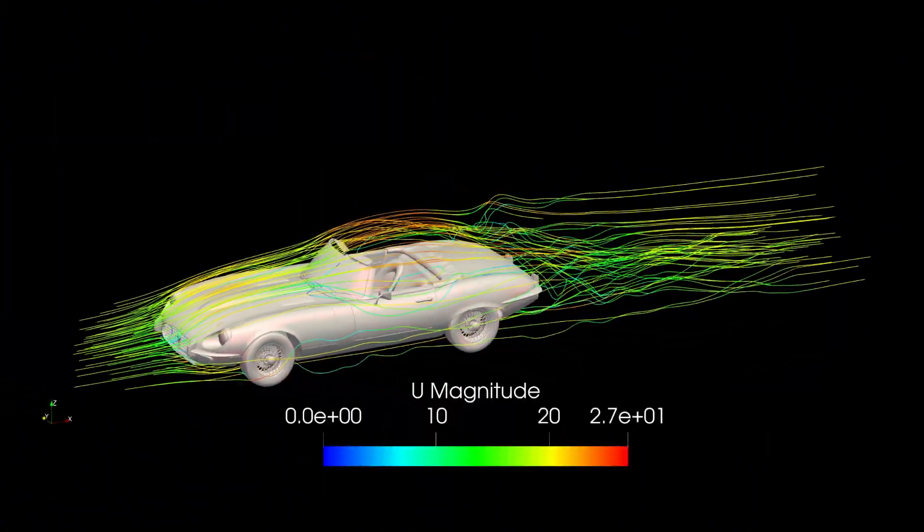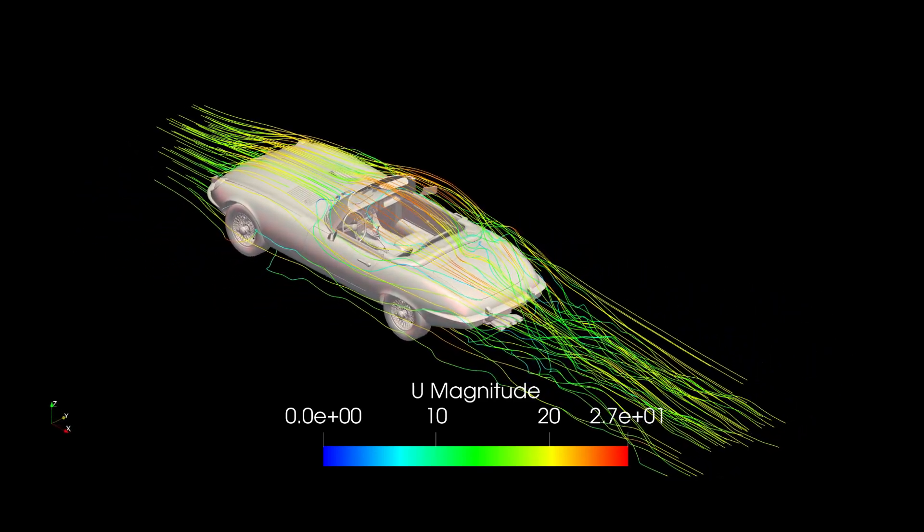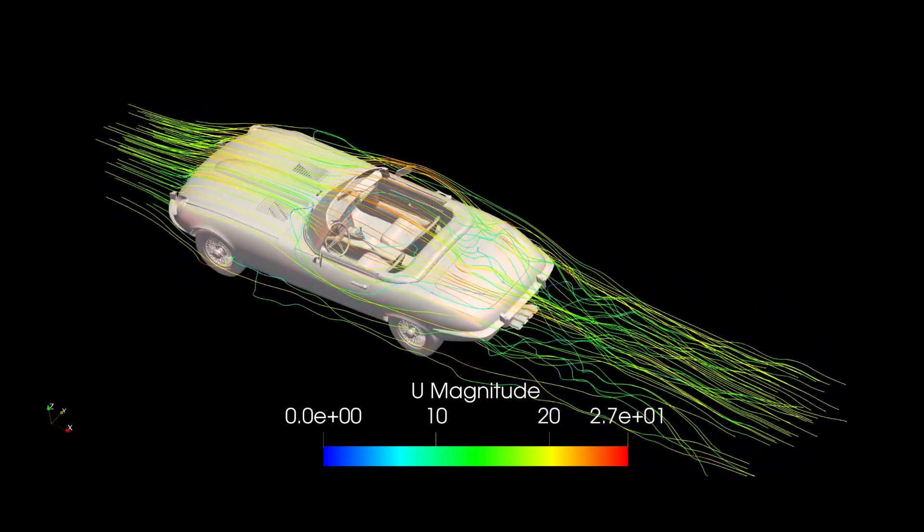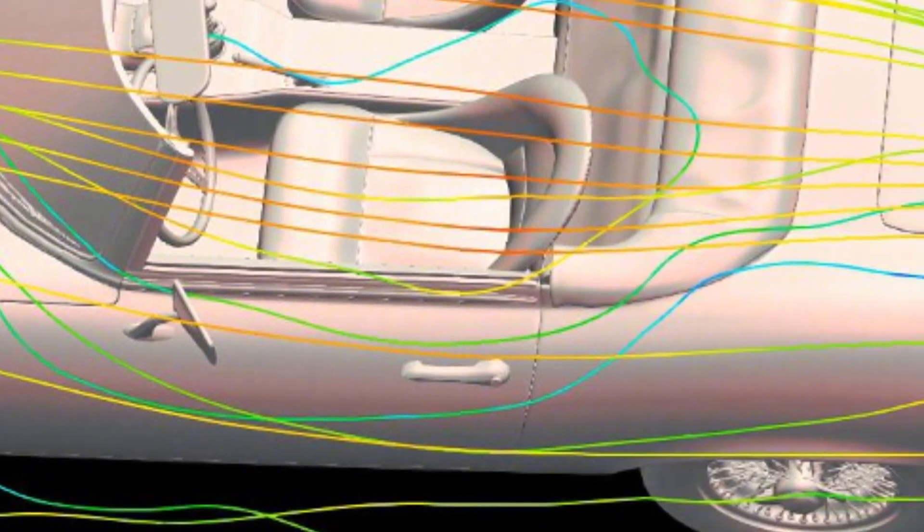These streamlines show us just how disjointed the flow is over the Jag. It is really nice over the front, but then it hits the front windshield, zips over the cabin, and just goes haywire from there. One thing to note is you can see at the edge of the windshield, the flow seeps down over the side of the car before jumping back up over the boot.